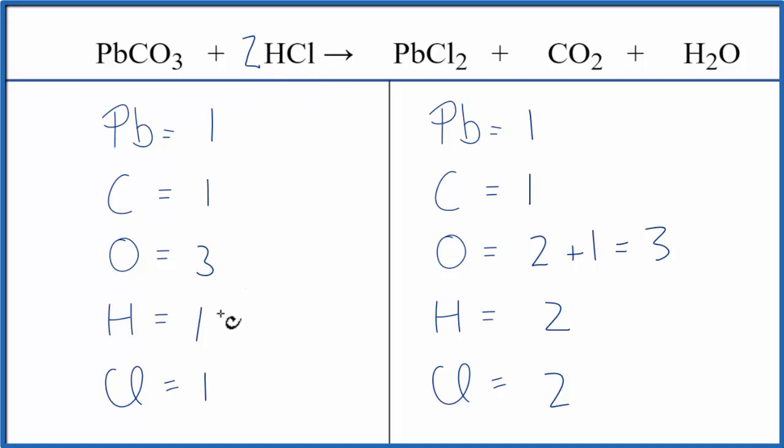So we have one hydrogen times two, that gives us two, and those are balanced, and then chlorines we have one chlorine times the two, and now the chlorines are balanced, and we're done with this equation.